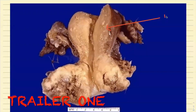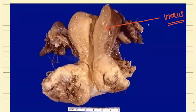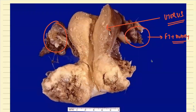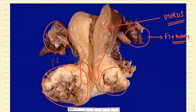This is the cut open section of the uterus. These portions are the fallopian tube plus the ovary. Now, what we see over here — if you can appreciate, normally it would have gone somewhat like this. But here, do you see any abnormality? There is an exophytic mass exhibiting areas of hemorrhage and necrosis — an abnormal, irregular mass. So this is your invasive exophytic cervical carcinoma.